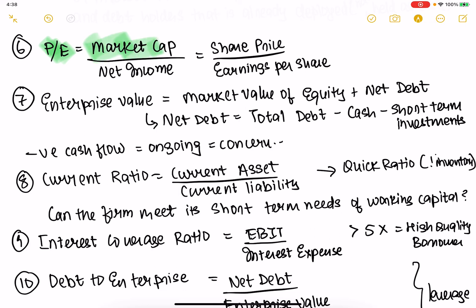Market cap is different from market value, which is different from book value. Market value includes what the public thinks the value of the company is — it includes the brand, intangibles, and the current valuation of all the assets the company owns. Enterprise value is market value of equity plus net debt.